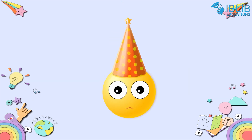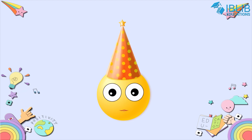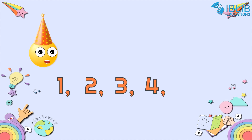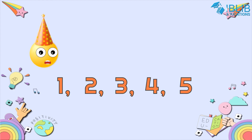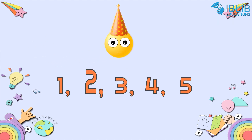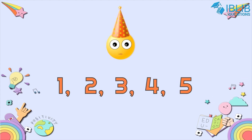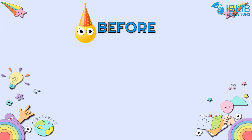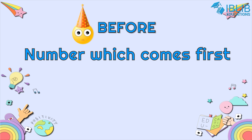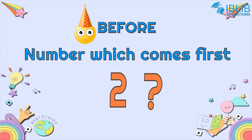Now there are five numbers: 1, 2, 3, 4, 5. Which number comes before 3? The number before 3 is 2. Yes, number 2 comes before 3. The number which comes first is called the 'before' number. Here we have number 2 — can you find the number before 2?